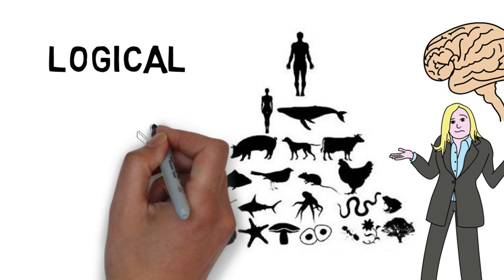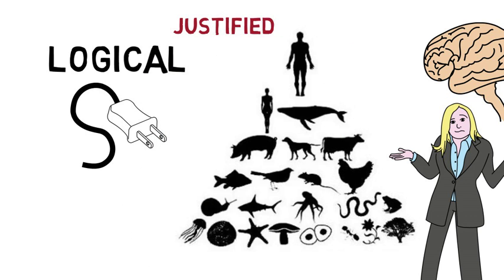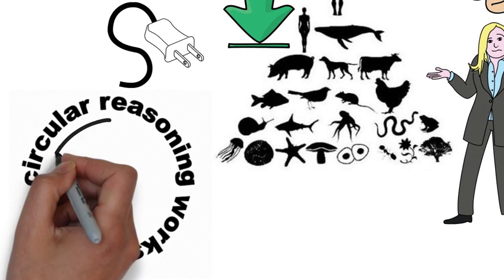There is no logical connection between our position in the food chain and the justifiability of eating animals which are seen as lower. This is known as circular reasoning.